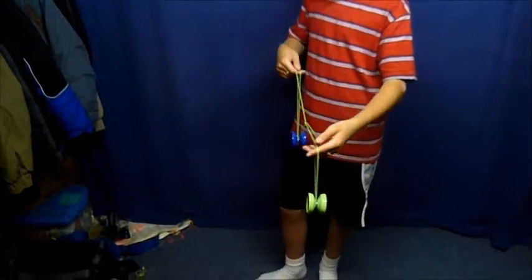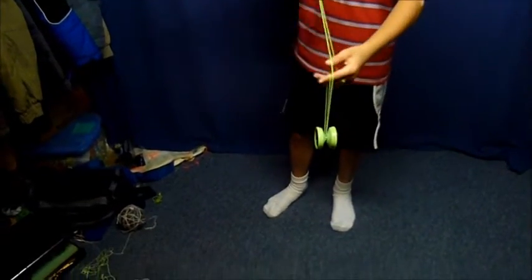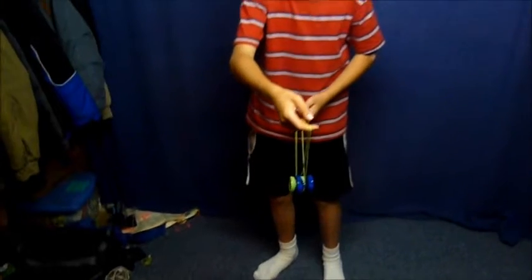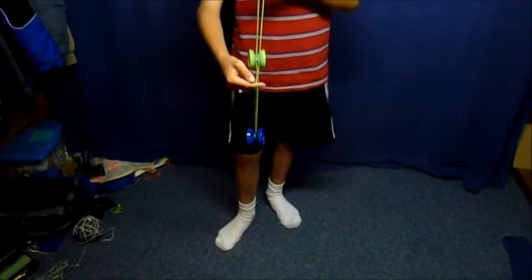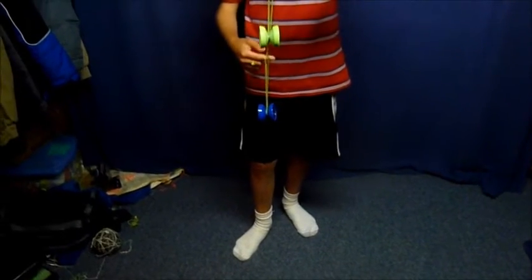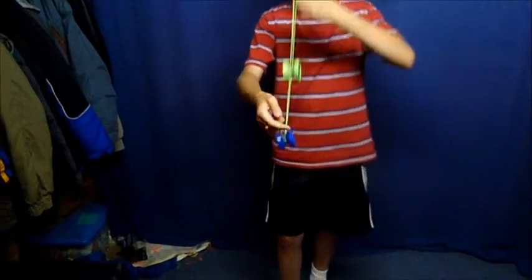What you're going to do is push your dominant hand yoyo into that front string like that. Then you're going to start making a circular motion like this where you're just pushing the top yoyo into the front string and then like that again and again.